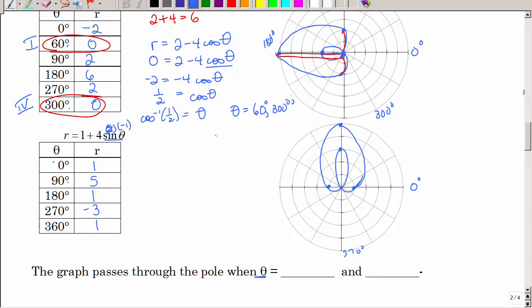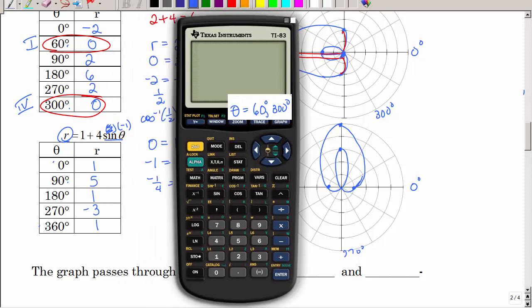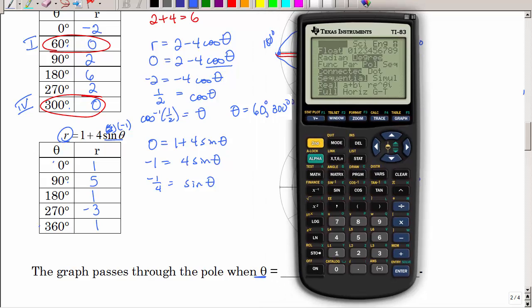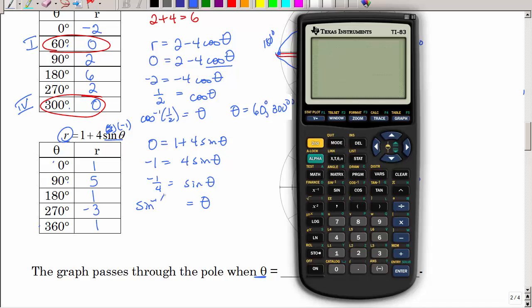So what I want to know is when did it pass through the pole? What is theta? So we're going to do this algebra. We're going to say when R is 0, because that's when it passes through the pole. So subtract 1, divide by 4. Now this is not something we've memorized from trig. We're going to need a calculator. So again, I want to make sure I'm in degree mode. I want theta to be the inverse sine of negative 1 fourth.